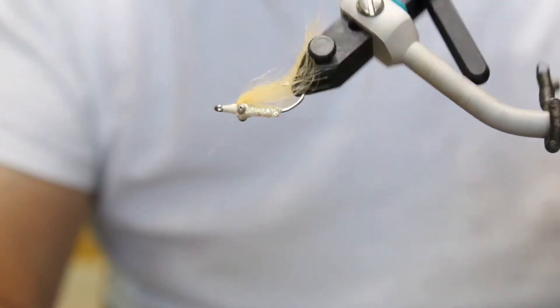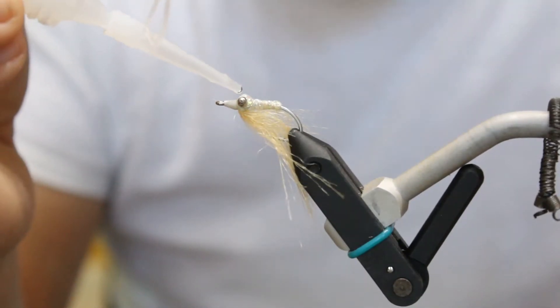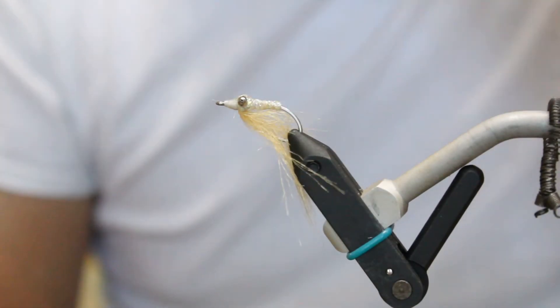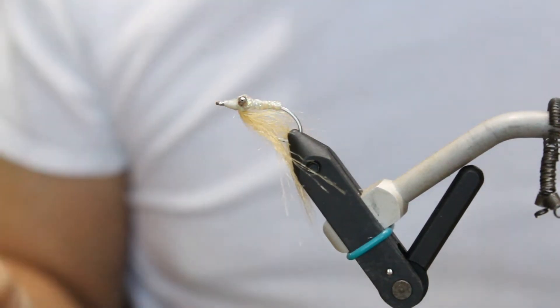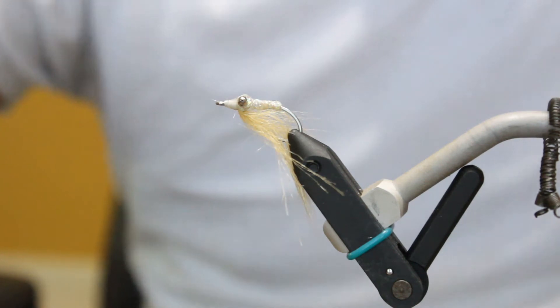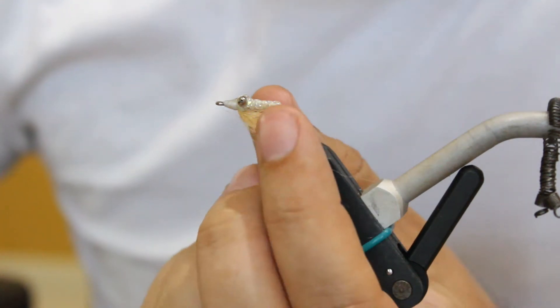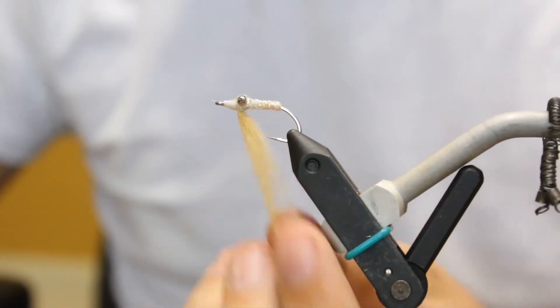There we go, just a little bit. And then I want to get some zap-a-gap on the eyes and over the front. Make sure that you don't get it in the eye. And zap-a-gap should be drying. Now you have a perfectly good fly.